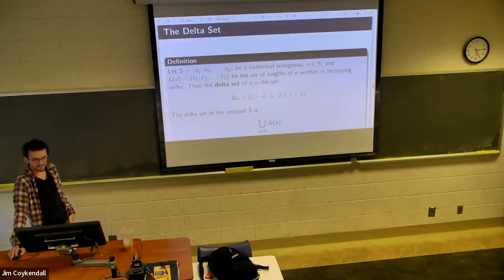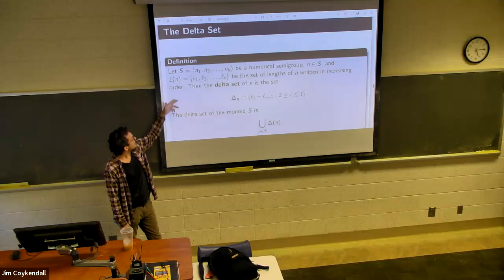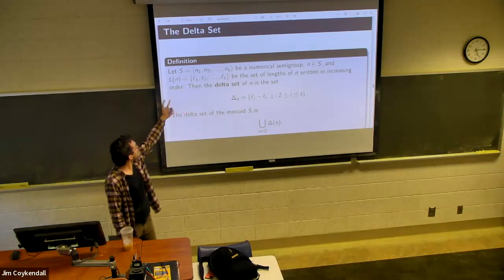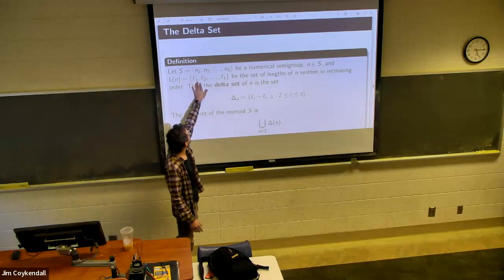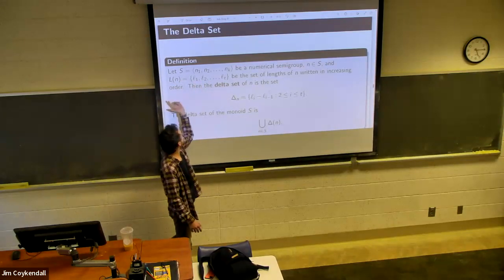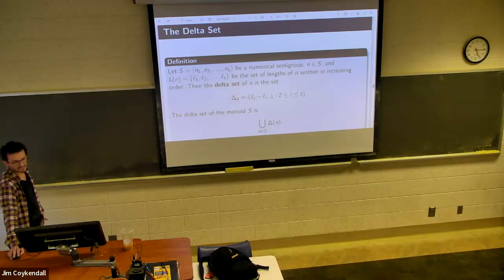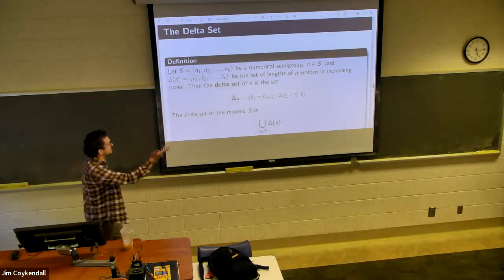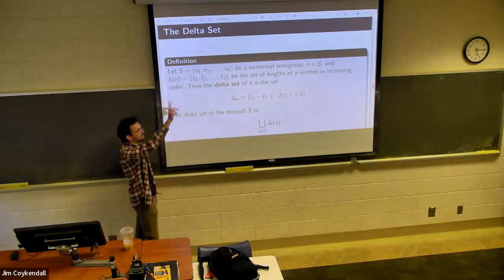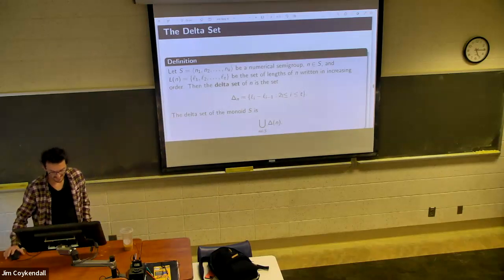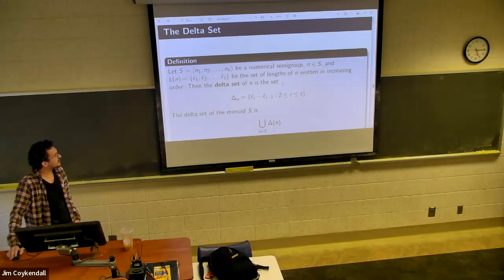So now we go into the delta set. Again, with our theme, we define it for an element, then we define it for the whole thing. So, take the generator of n1 to nk, then L of n for some n. We order the lengths to be increasing. So then the delta set for n should be li minus li minus 1, you know, i between 2 and t. That should be delta parenthesis n, and then here I should have had delta parenthesis big S, but technology. So then that's our delta set definition.